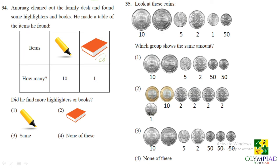Question number 34. Anurag cleaned out the family desk and found some highlighters and books. See he made a table of the items found. So he found 10 highlighters and one book. So did he find more highlighters or books? So he found more highlighters. So highlighter option one is correct.